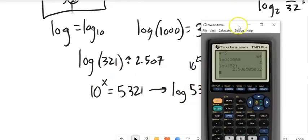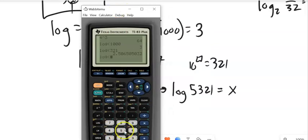Of 5321 equals x. Notice x is the exponent. And so this I can just, okay. How about I just do that on my calculator? Log 5321. And it's about 3.726.